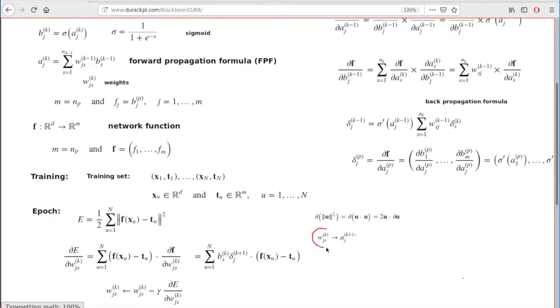If you perturb this weight, this perturbation will first affect the a functions in the immediate layer to the right, and then it will continue all the way to the right to the f and the error function. And that explains how the chain rule works.